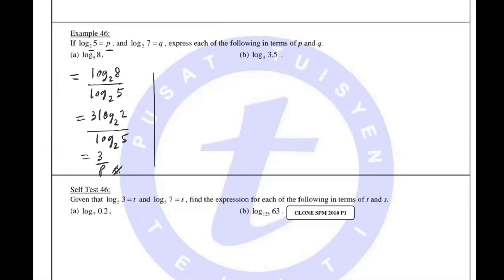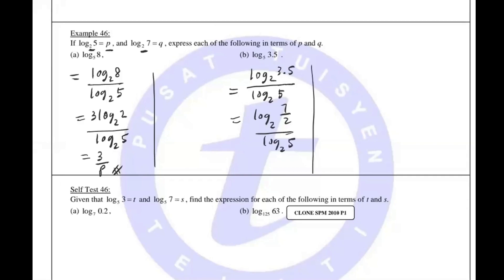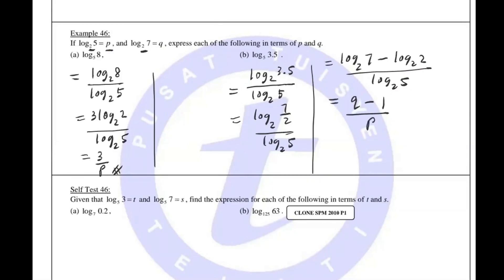For the second one, we change the base. Both involve base 2, so change to base 2. 3.5 stays on top, 5 stays down. Then we break it up. In logarithm, division when you break it up becomes minus. This gives log base 2 of 5, and log base 2 of 7 is Q. Log base 2 of 2 is 1, and log base 2 of 5 is P.